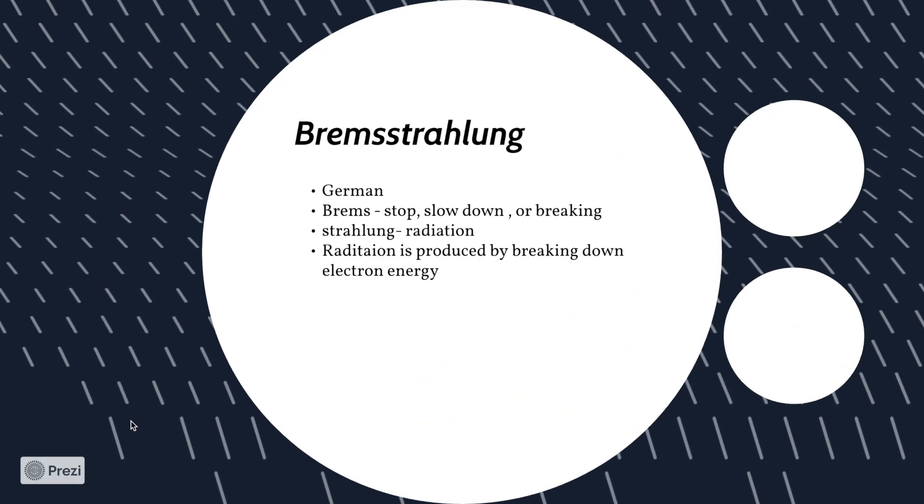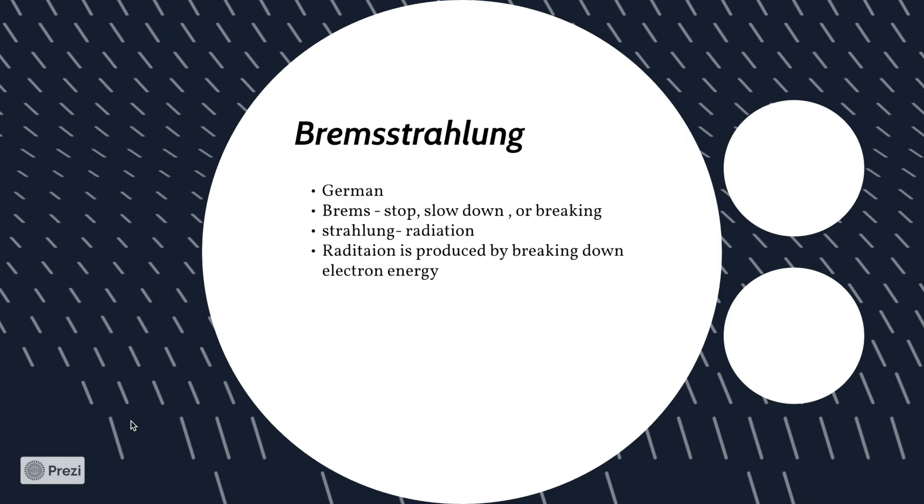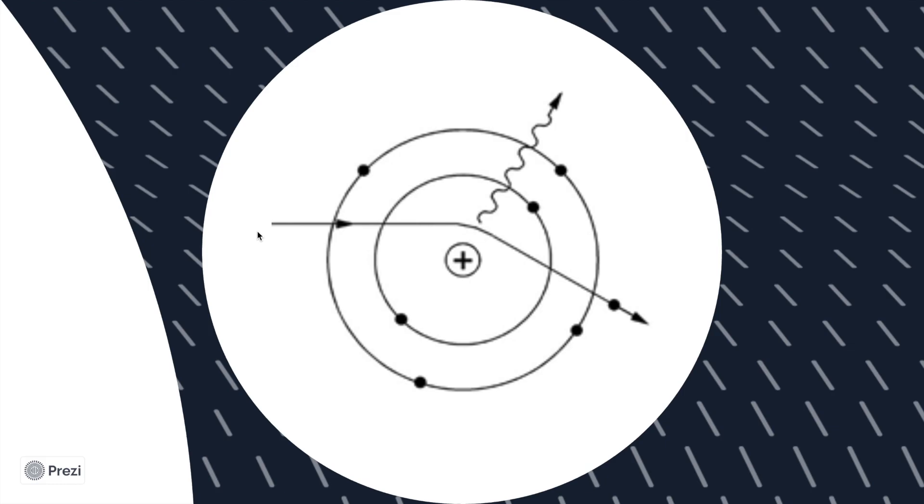The first interaction that happens most is Bremsstrahlung. Bremsstrahlung is German: 'Brems' meaning stop, slow down, or braking; 'strahlung' meaning radiation. Radiation is produced by breaking down electron energy. An electron produced by the filament goes near the nuclear force field where it breaks down and deviates.